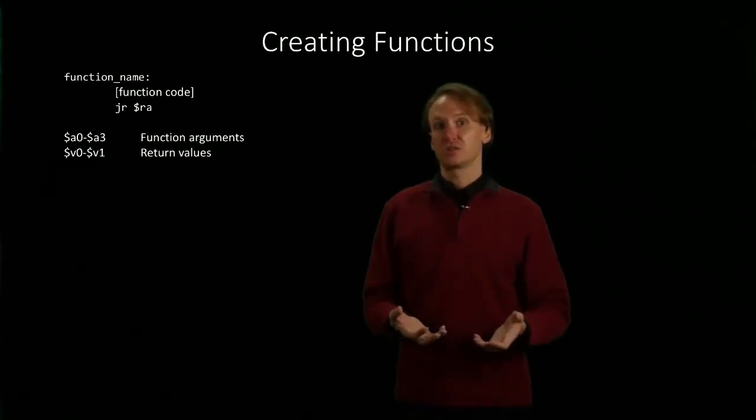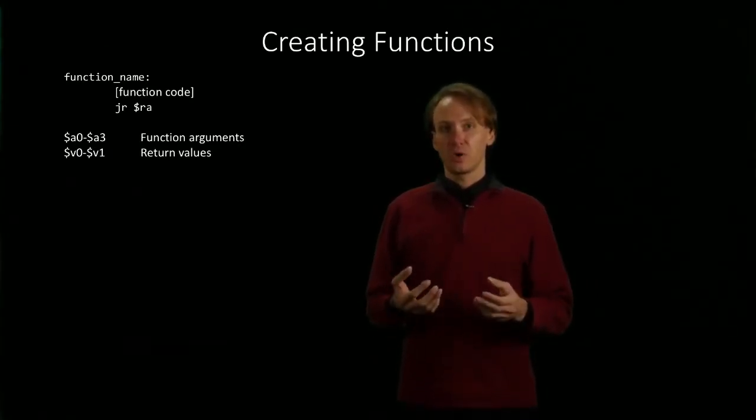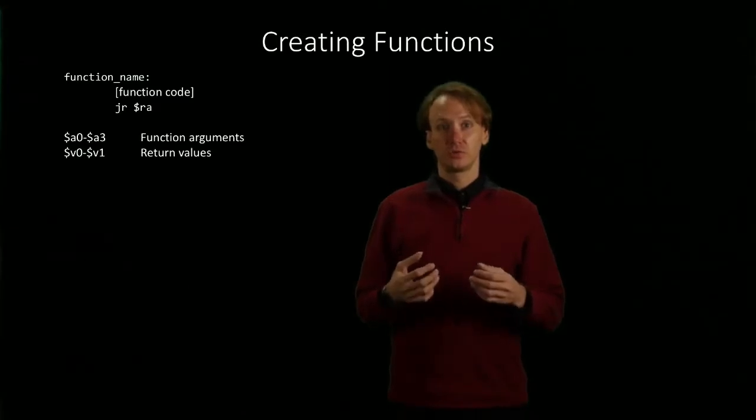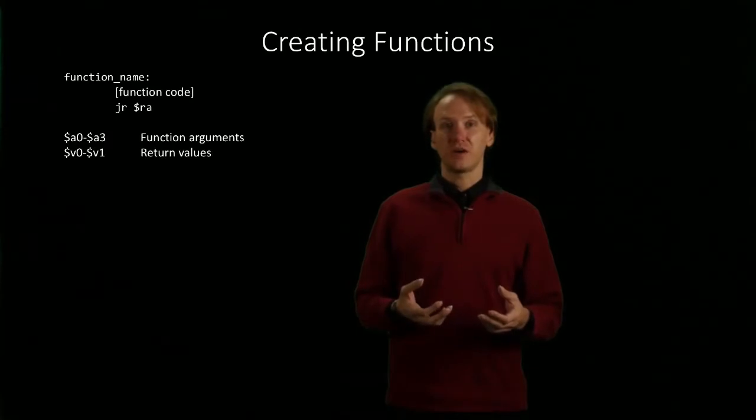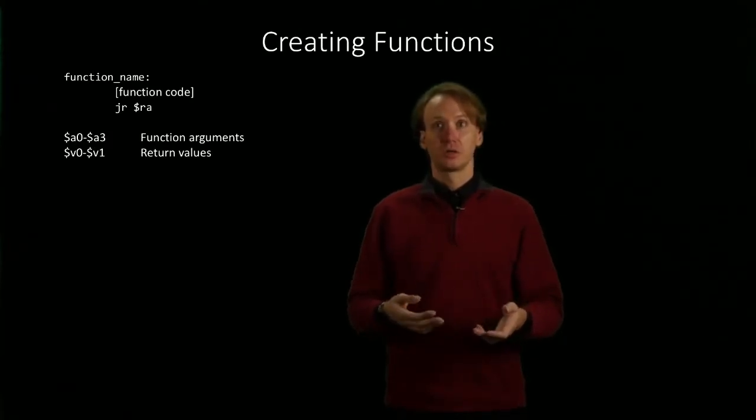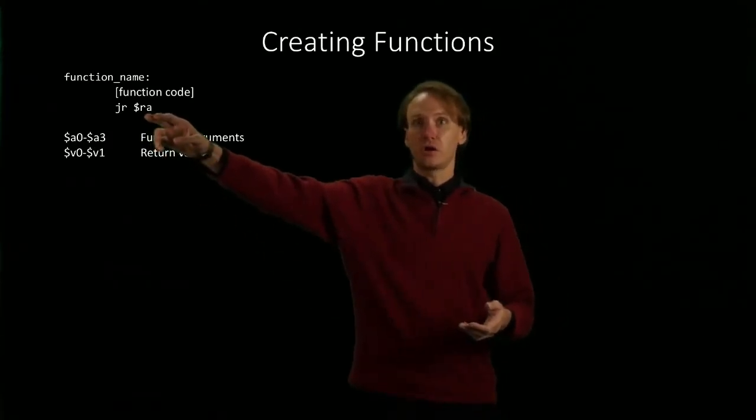This is the jump register instruction. What this does is it tells the machine to jump to a different line of code, and it's going to go to the one that's specified by some register. In this case, the $ra register.